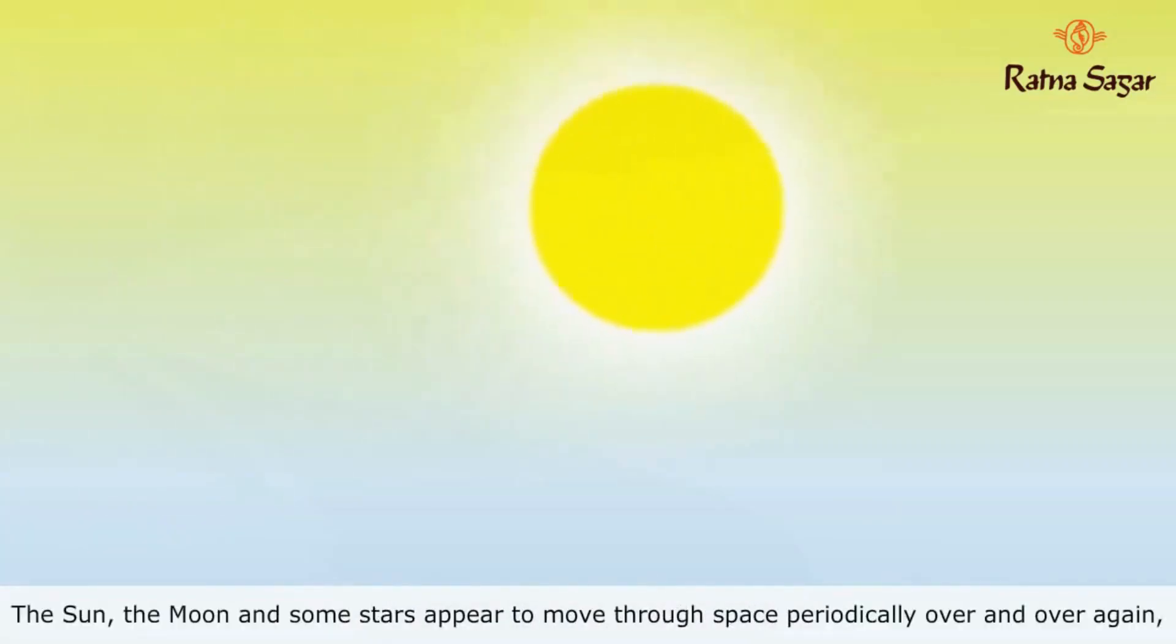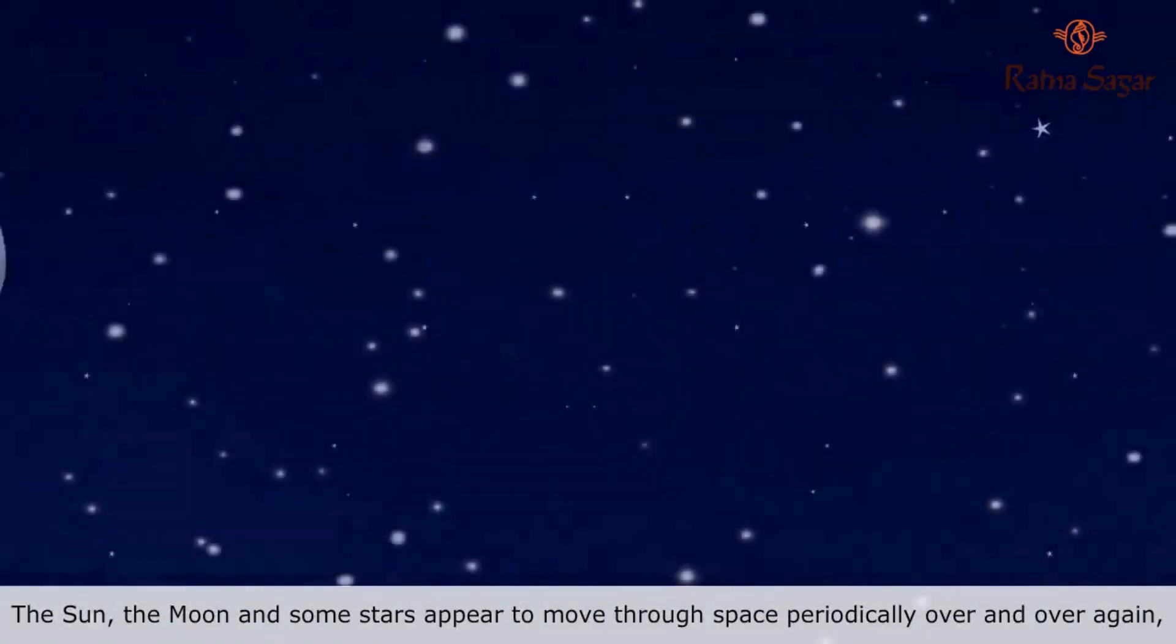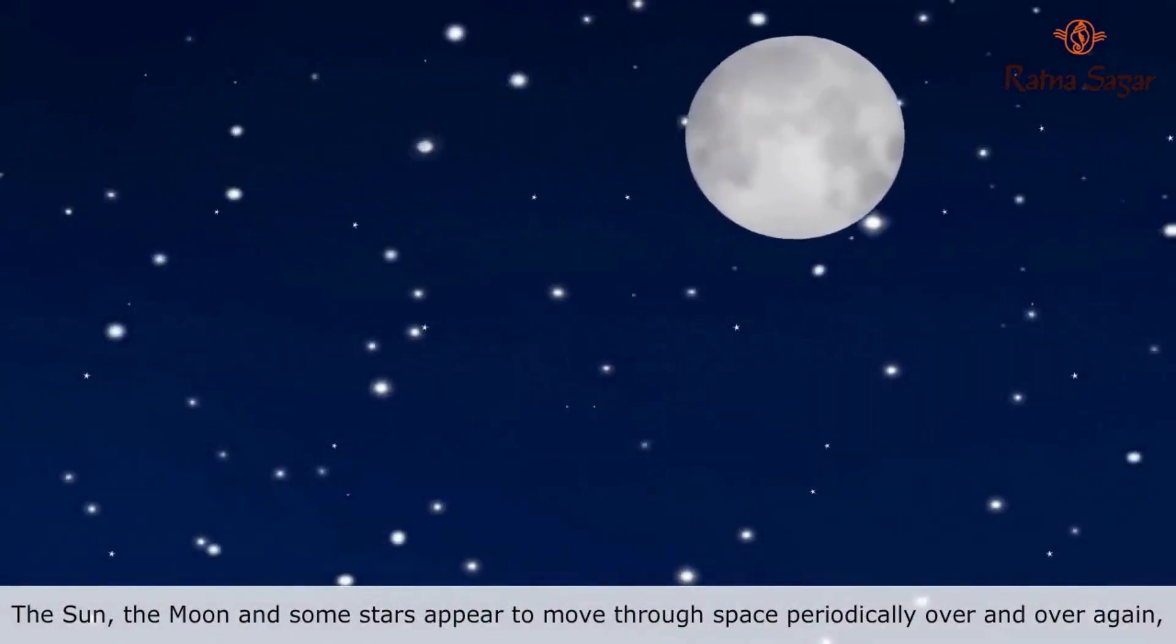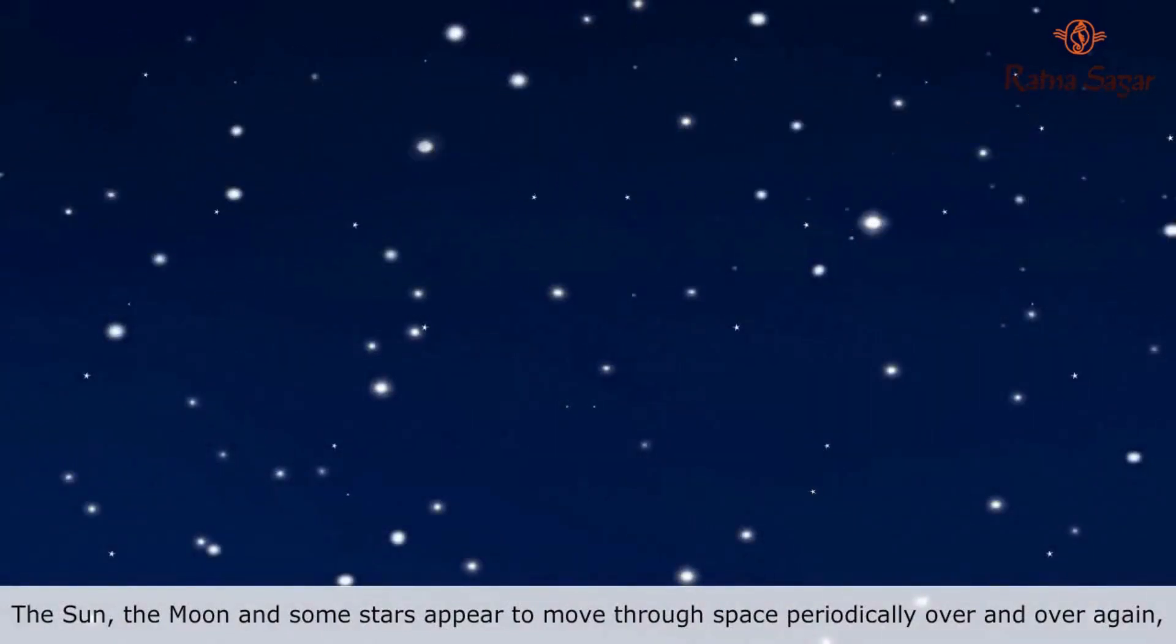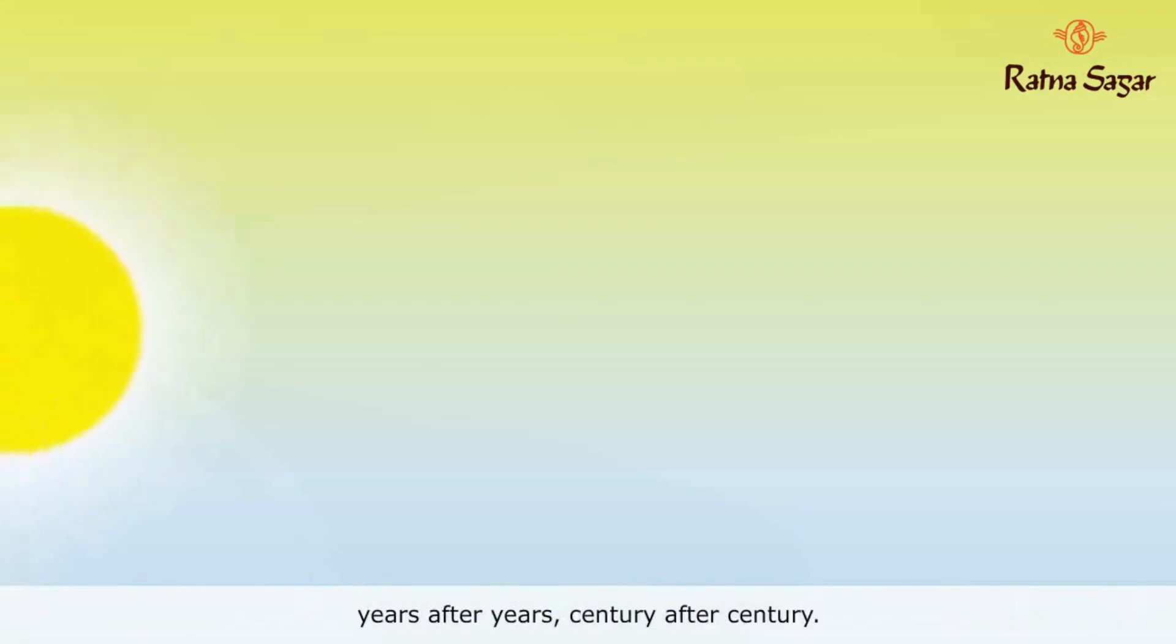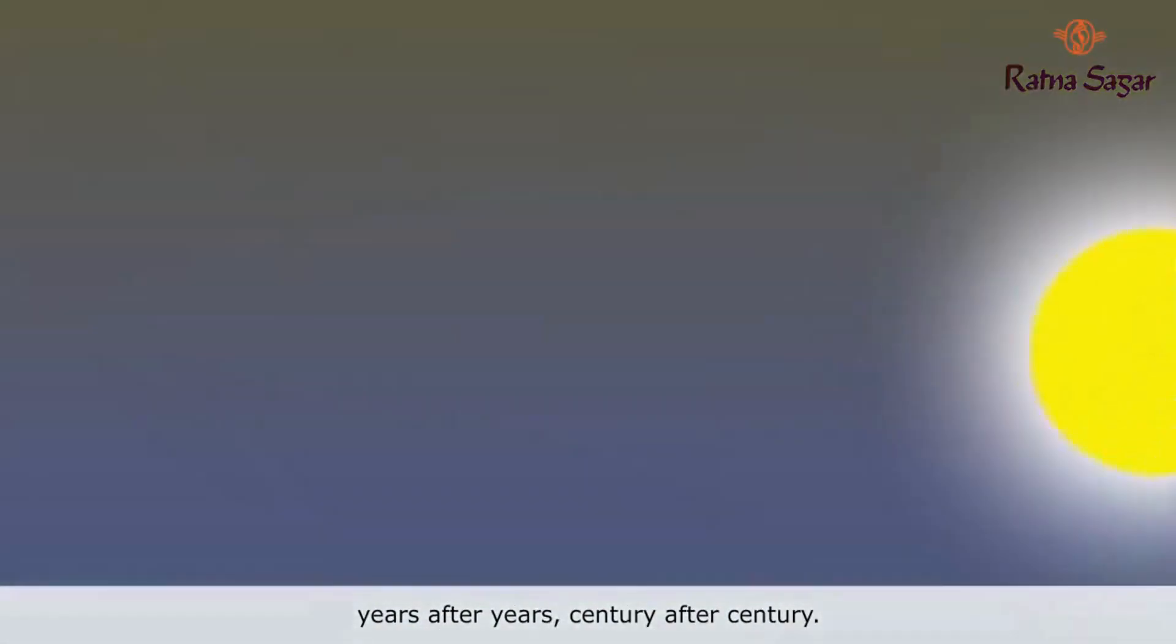The sun, the moon and some stars appeared to move through space periodically over and over again, years after years, century after century.